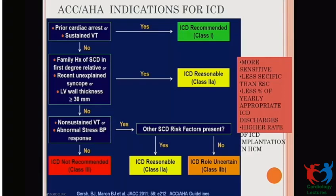According to ACC guidelines: Class 1 indication for ICD is prior cardiac arrest or sustained VT. Class 2 indication includes family history of SCD, recent unexplained syncope, or wall thickness more than 30 mm. If these are not present, non-sustained VT and abnormal BP stress response should be evaluated — these along with other features result in a Class 2 indication. If none of these are present, ICD implantation is not suggested.